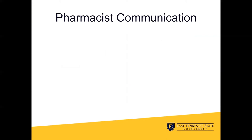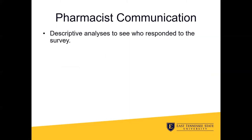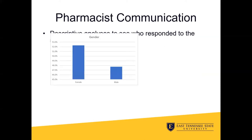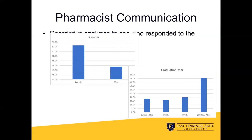Once we had the data, we started examining them by first running descriptive analyses to see who responded to the survey. We had some questions in the survey that provided us with a picture of the person responding — their gender, race, type of pharmacy they worked at, and other characteristics. We wanted to get a sense of the distribution of our sample based on these characteristics. The figures here, which are bar graphs, quickly show us a snapshot of that sample.